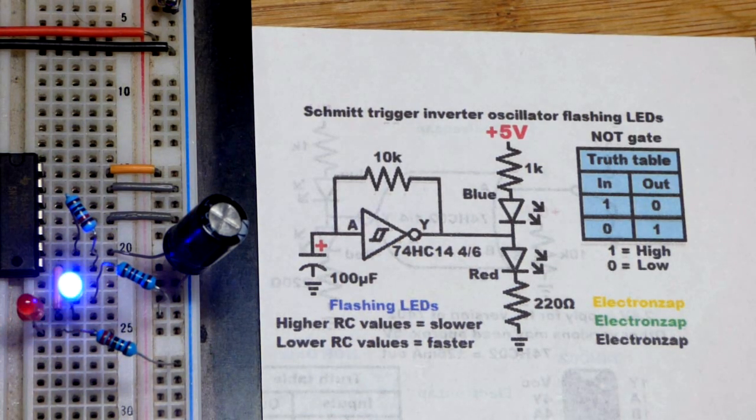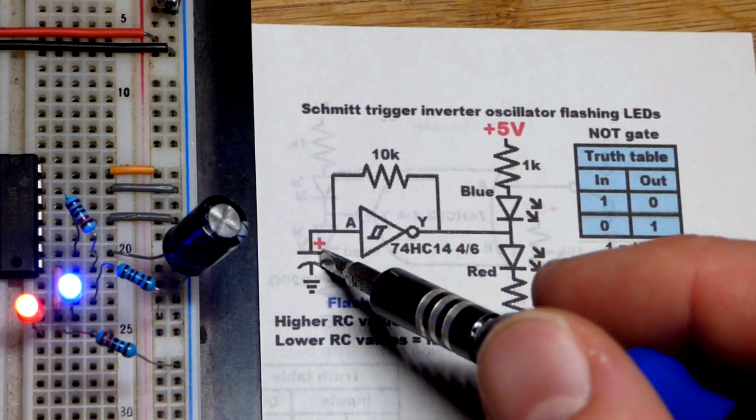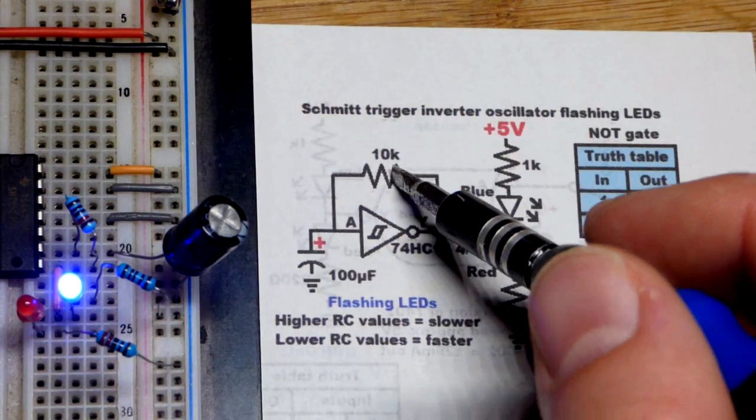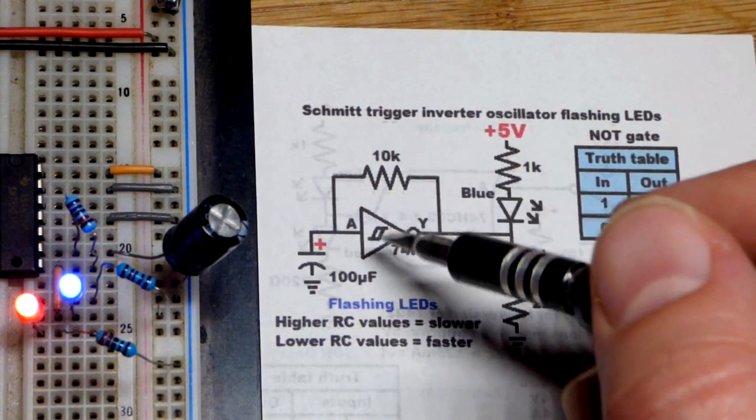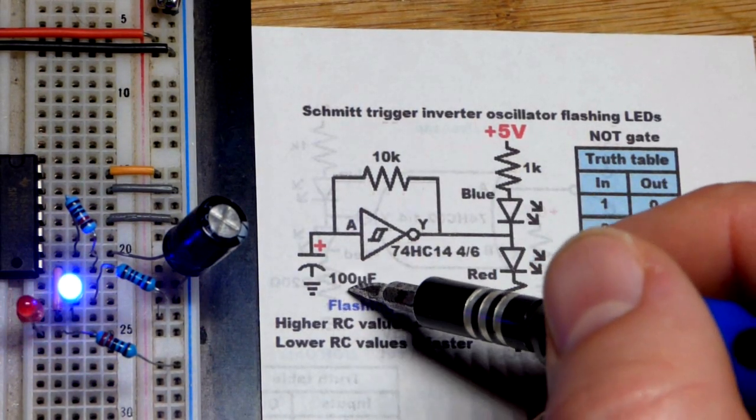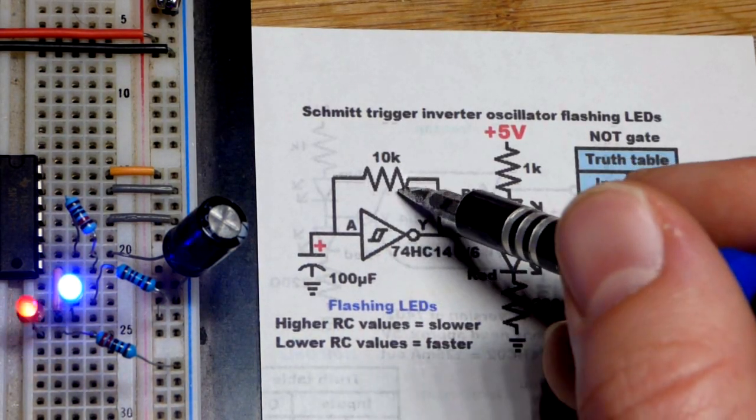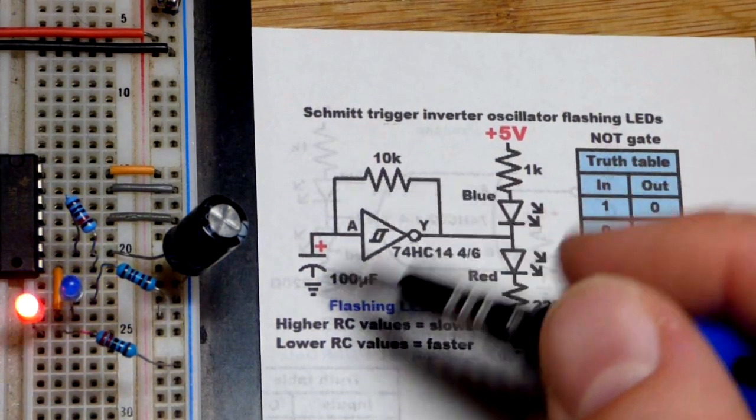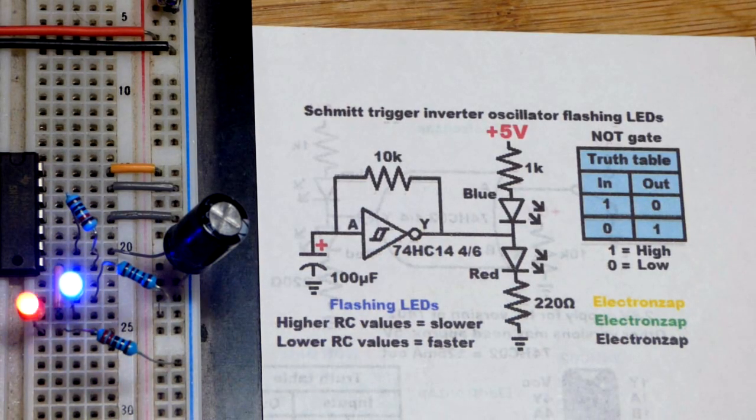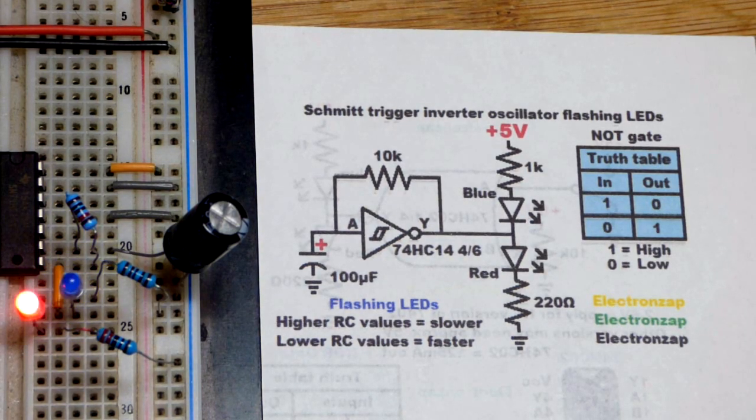This one's pretty simple, though. So, we could extend the timing either by doing a larger capacitor or a larger value resistor or both. Or we could shorten the time by using either a smaller value capacitor or a smaller value resistor or both, even. So, you can fine tune this by going larger and smaller with one or the other when it comes to the timing.